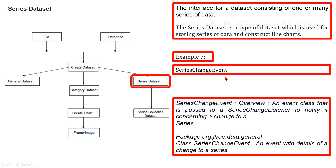Overview of SeriesChangeEvent: an event class that is passed to a SeriesChangeListener to notify it concerning a change to a series. The class SeriesChangeEvent in package org.jfree.data.general is an important event for dataset classes that maintain a collection of series. The dataset needs to know when any of its data series has changed so that it can forward the dataset change event to its own listeners.